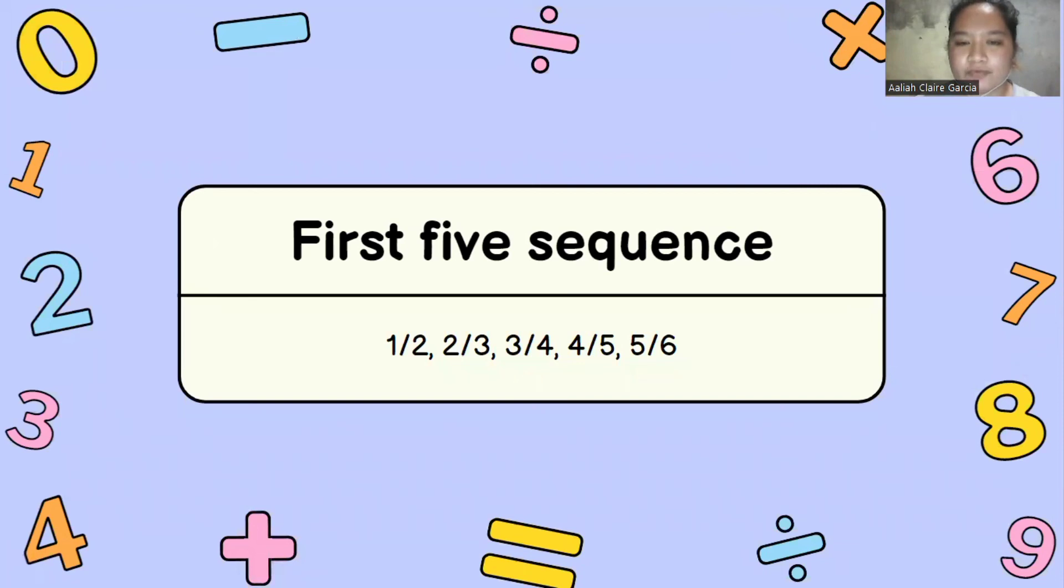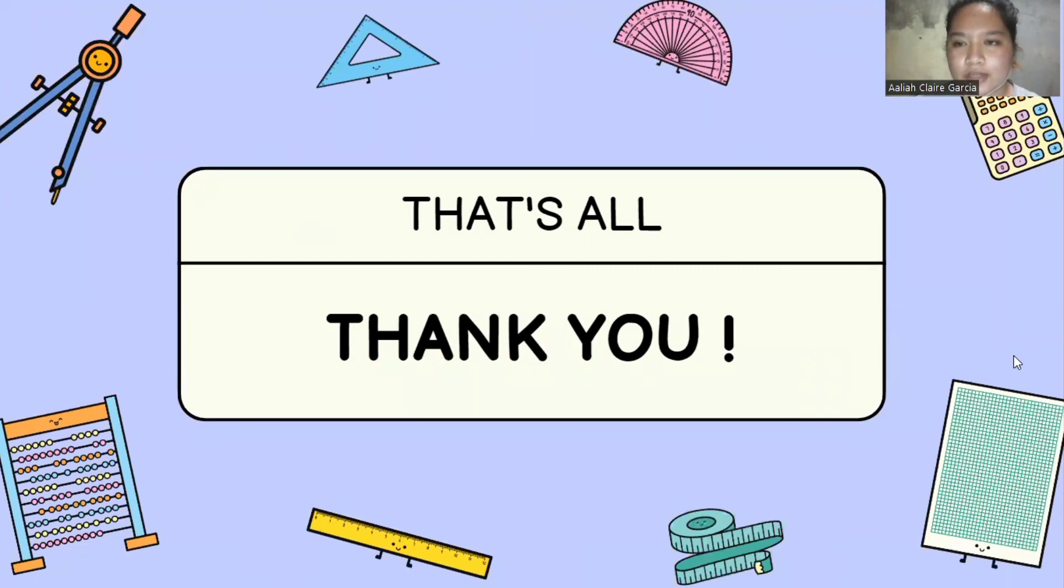The first five terms of the sequence are 1 half, 2 thirds, 3 fourths, 4 fifths, and 5 over 6. That's all, thank you.